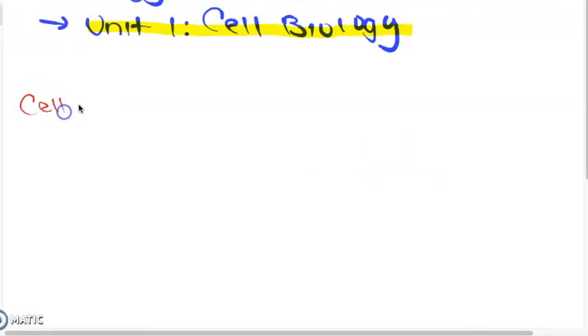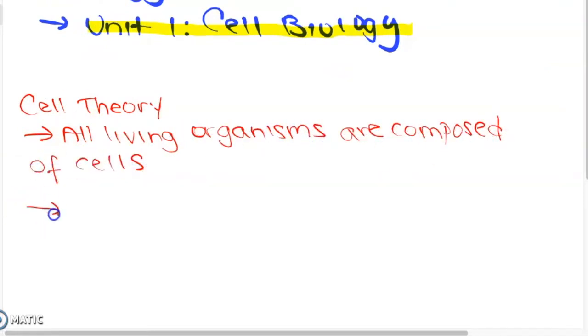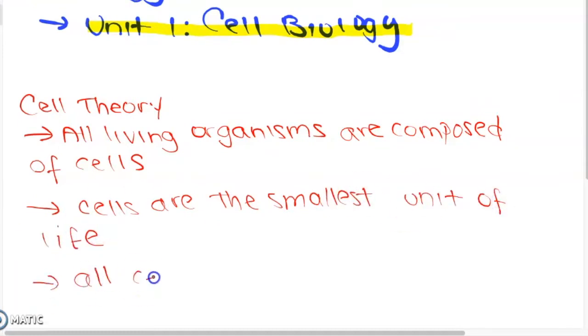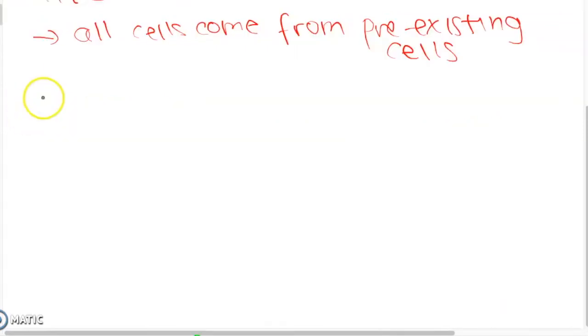But what is cell theory? Cell theory can be described as composed of three main rules, namely that all living organisms are composed of cells, cells are the smallest unit of life, and that all cells come from pre-existing cells. Now the IB syllabus point relating to this is just that all living organisms are composed of cells. But the IB also requires you to know exceptions to the cell theory.